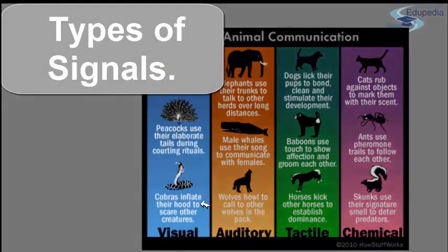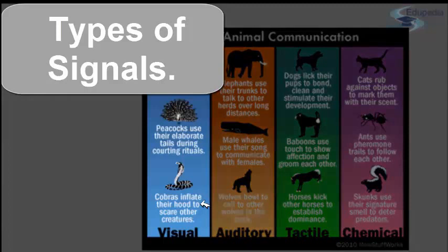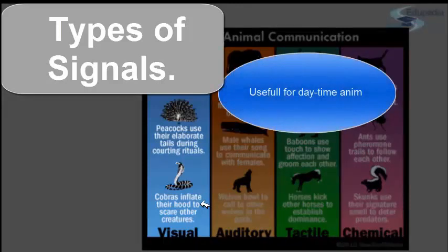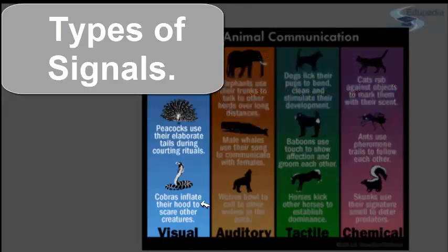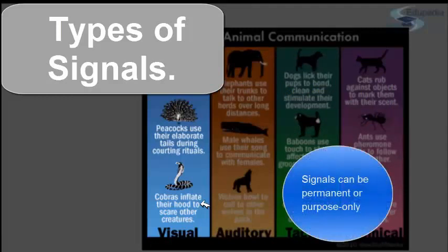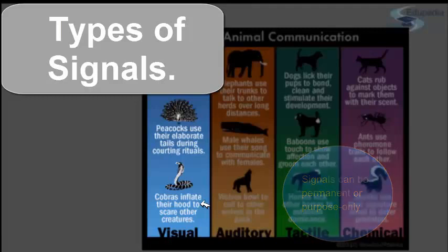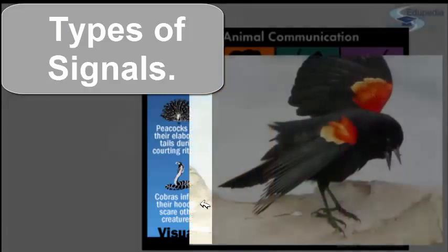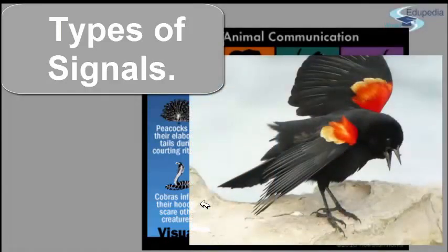For the visual signal, they are very effective for animals that are active during the day. Some visual signals are permanent advertisements. For example, the bright red epaulettes of a male red-winged blackbird. Its red parts are always displayed and this is very important for territory defense.